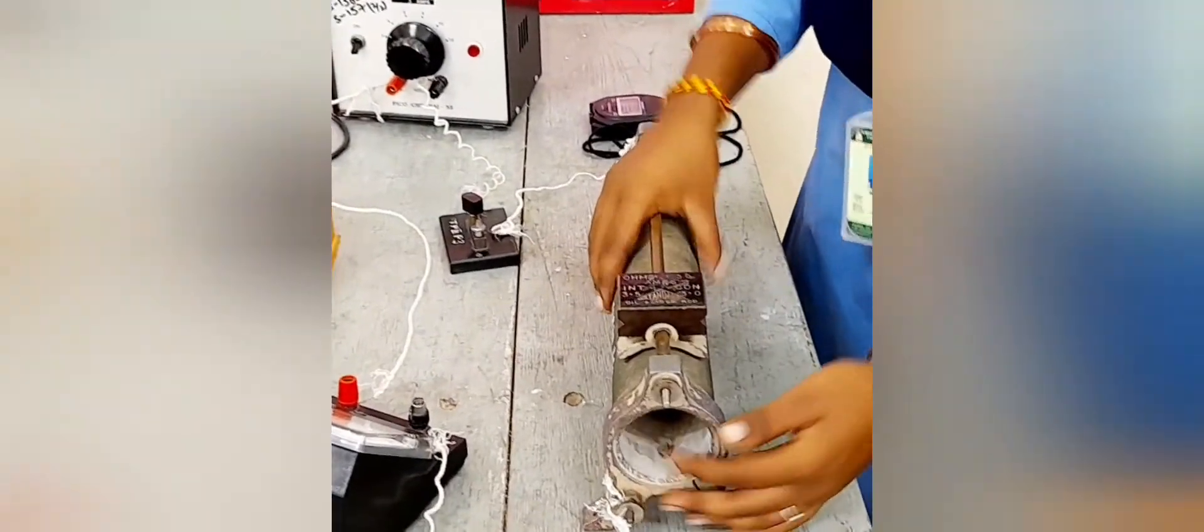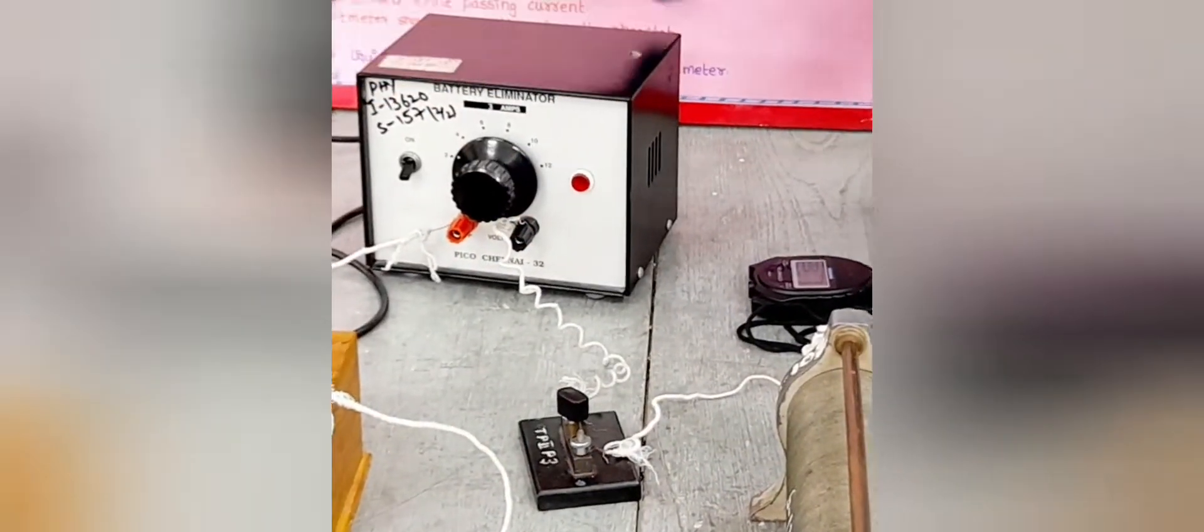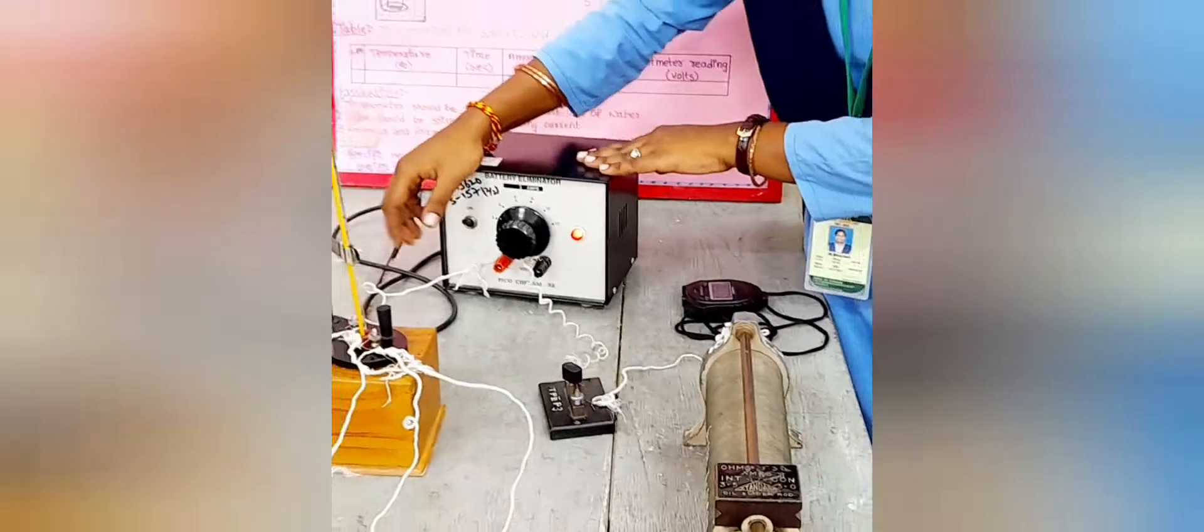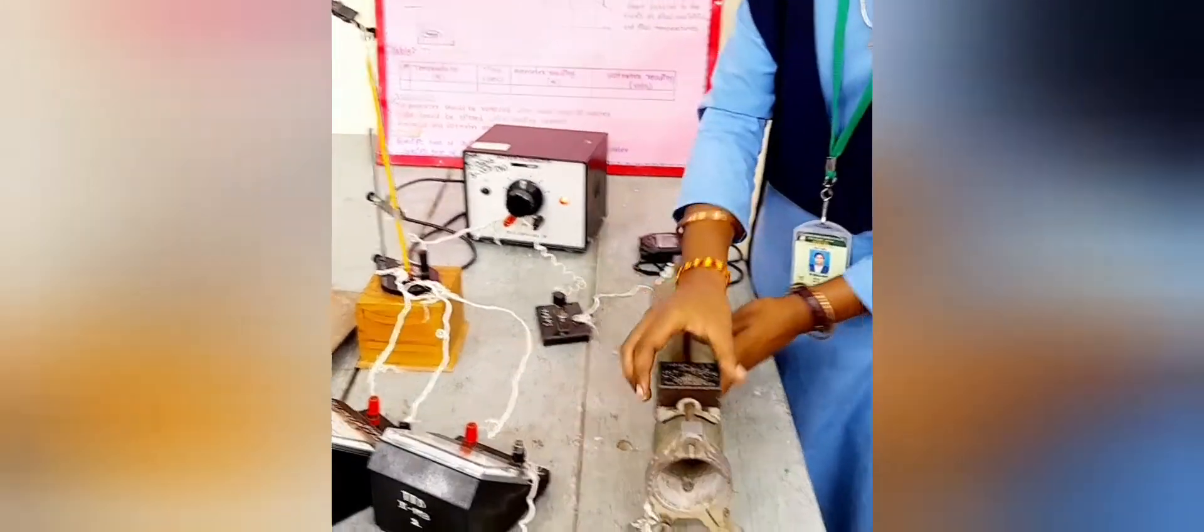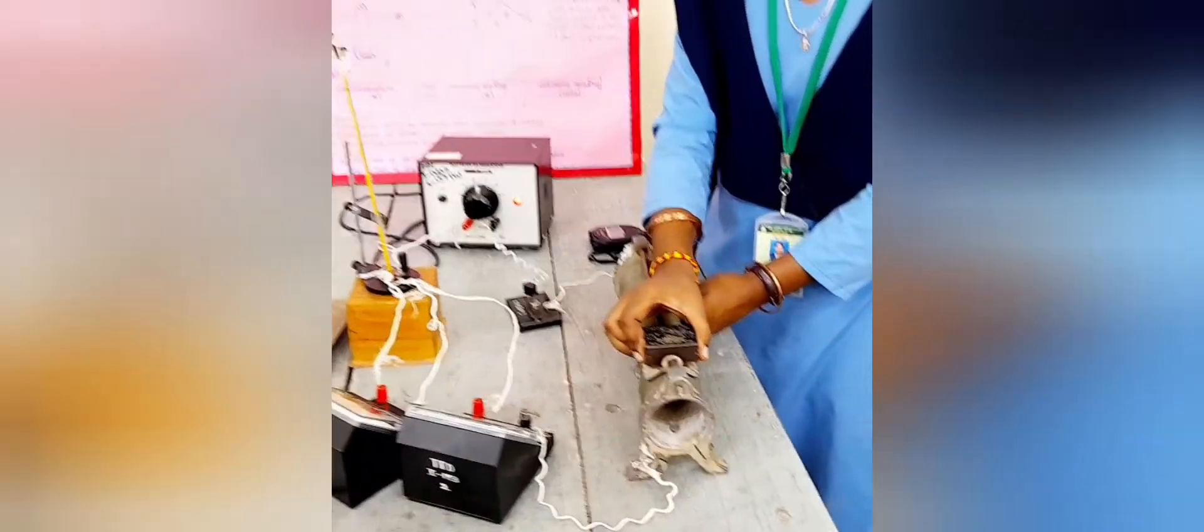Ammeter negative to the rheostat and rheostat to the key and key to the battery eliminator. When we switch on the battery eliminator, it runs. We can adjust the current with the help of the rheostat. It shows readings.